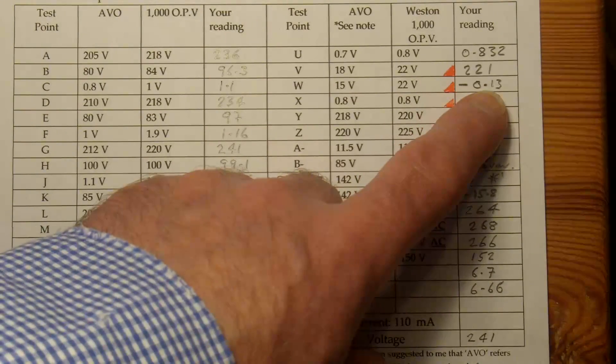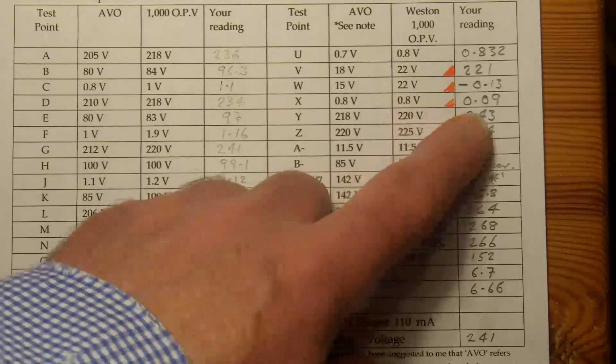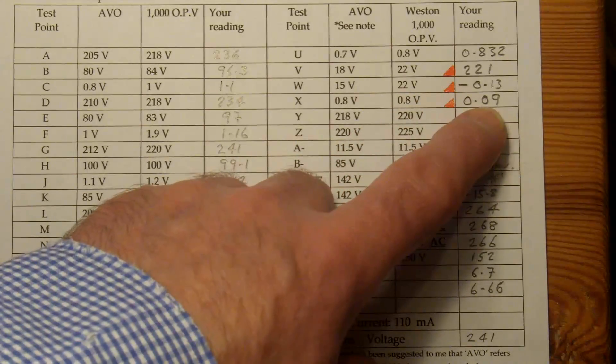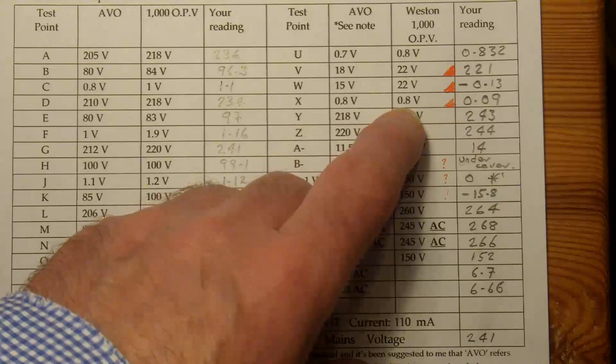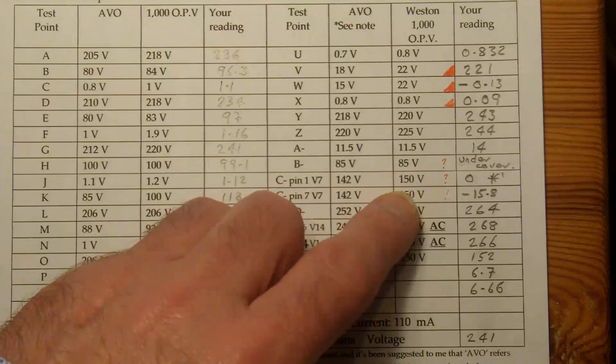Minus 0.13 volts where I should be getting 22. 0.09 where it should be 0.8. So, you know, more than a factor of 2 difference.